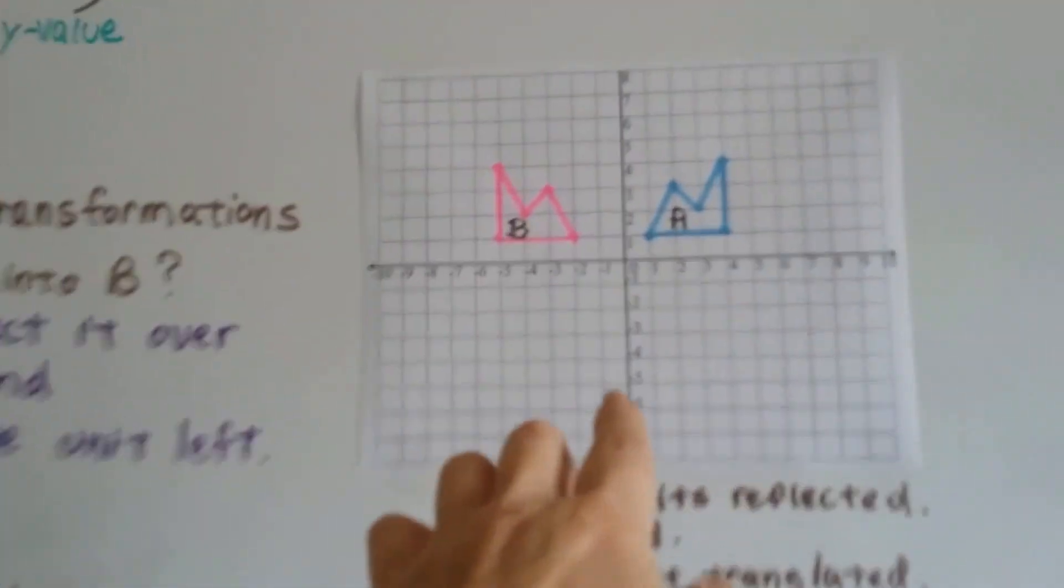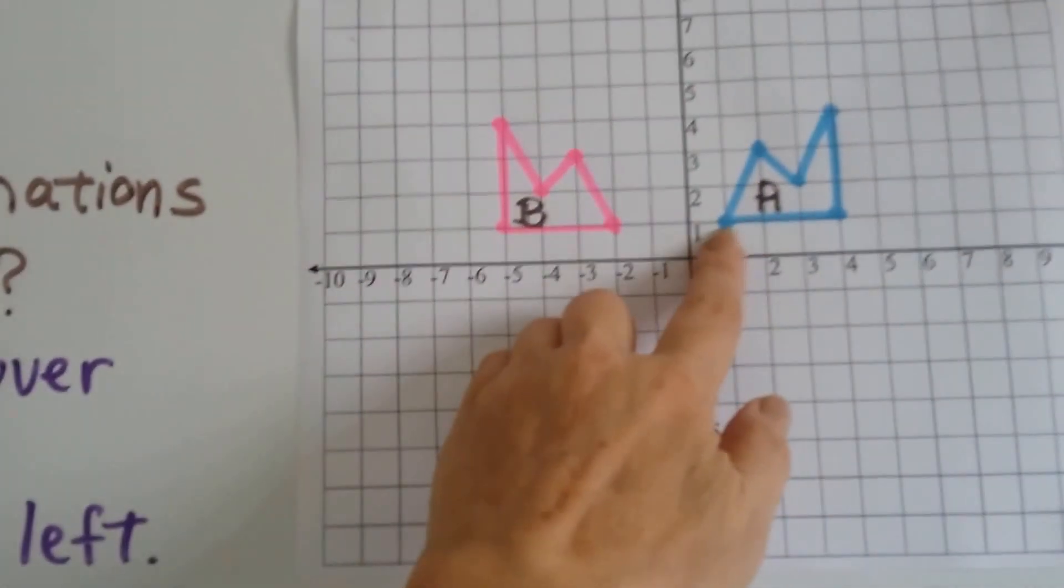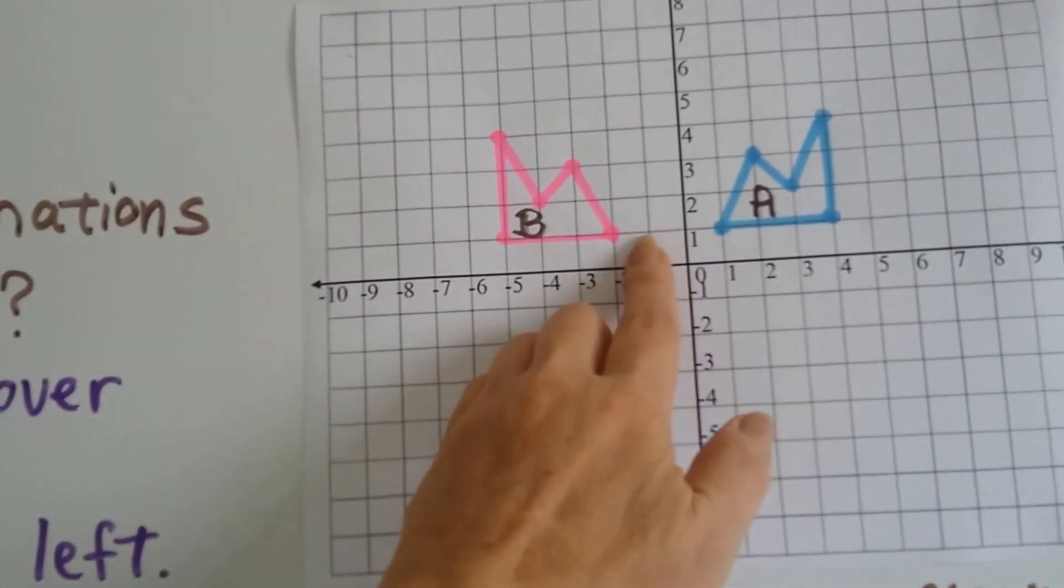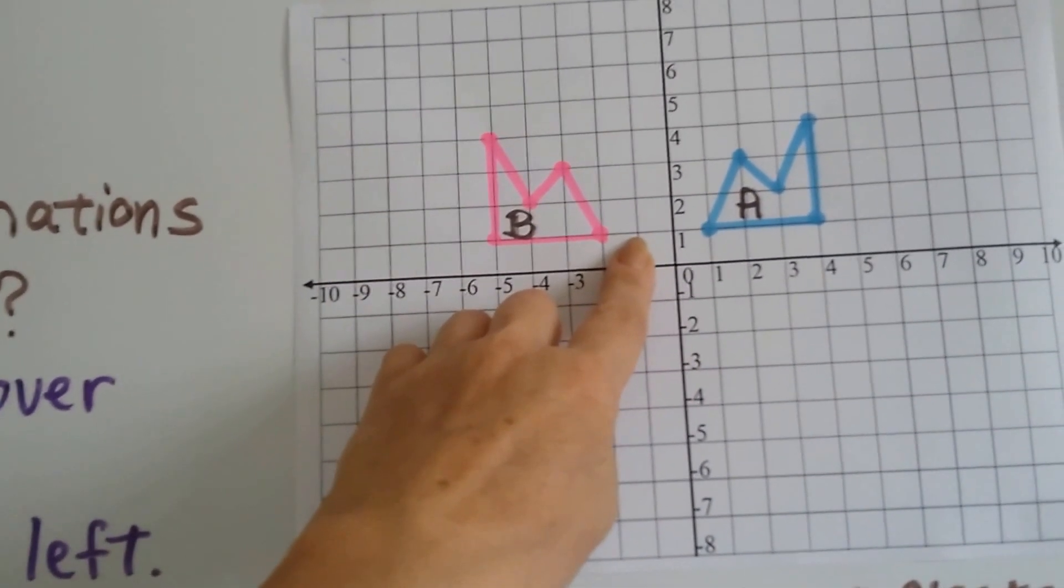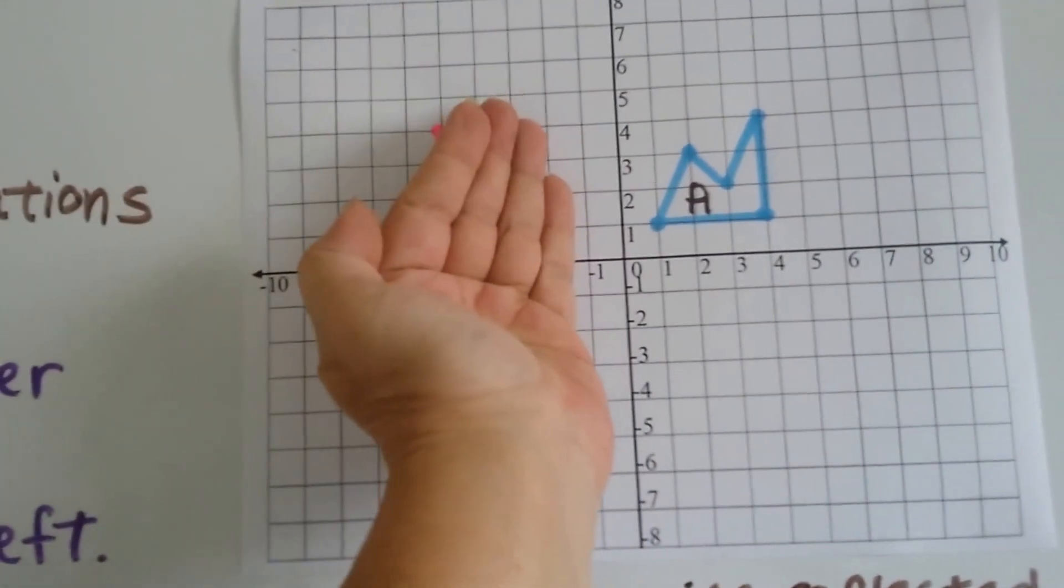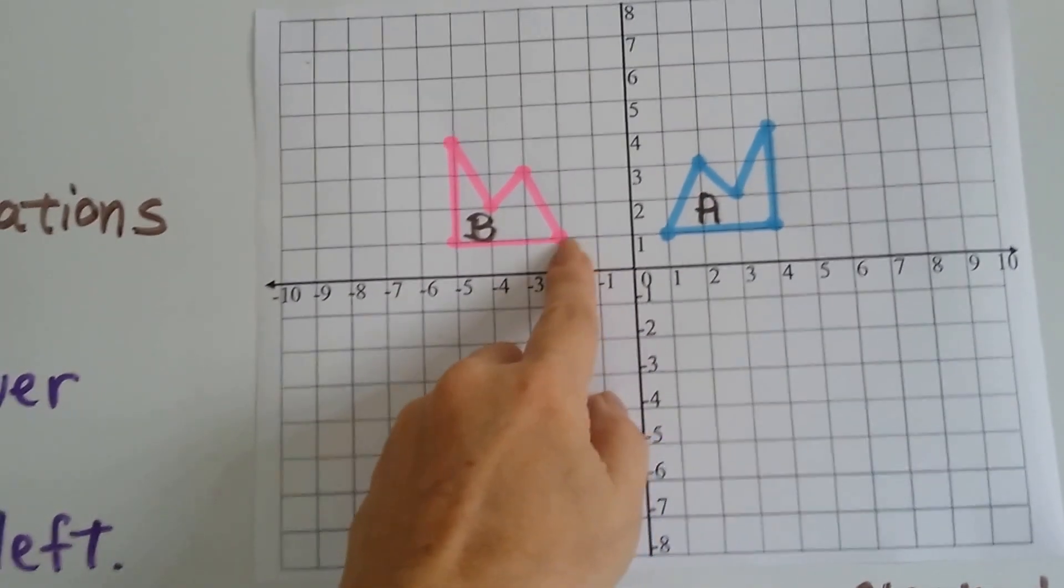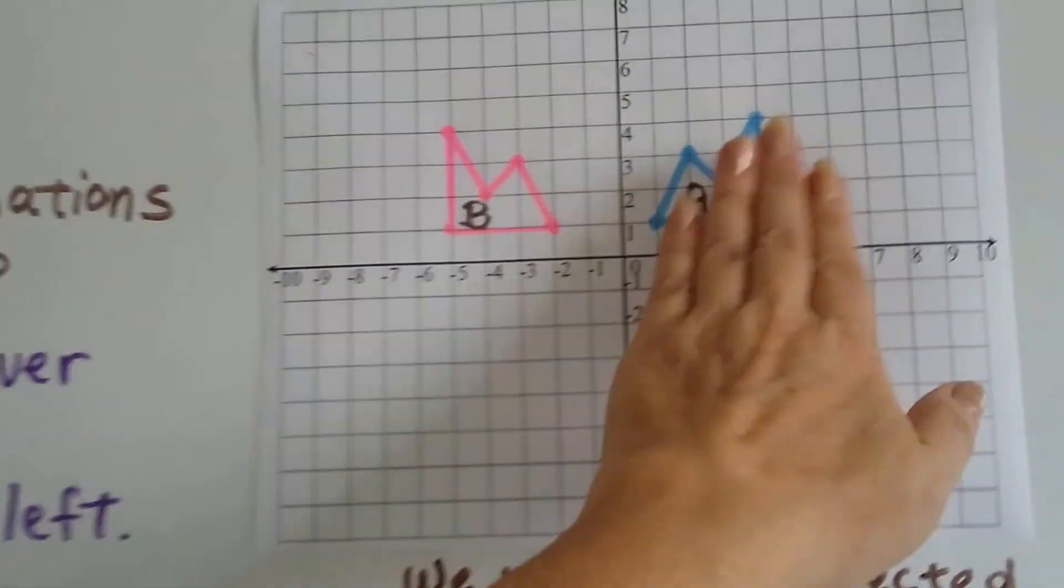The first thing we would do is reflect it over this y-axis. If you look here, this is only one unit away from the y-axis. So if we reflected it, that point would be right here, one unit over. That would be a perfect reflection. It would be right there. But look, it's not. It's over here.